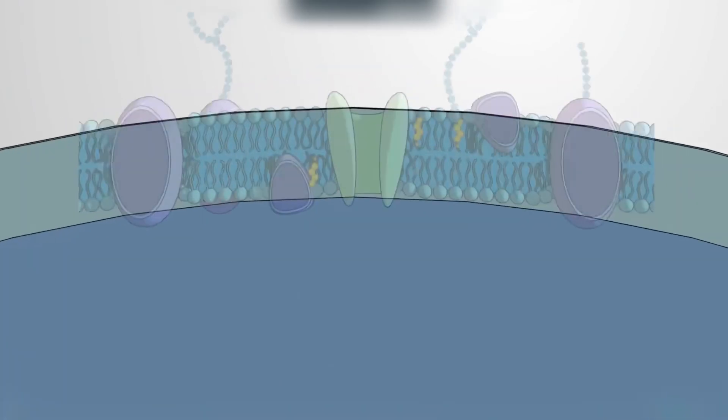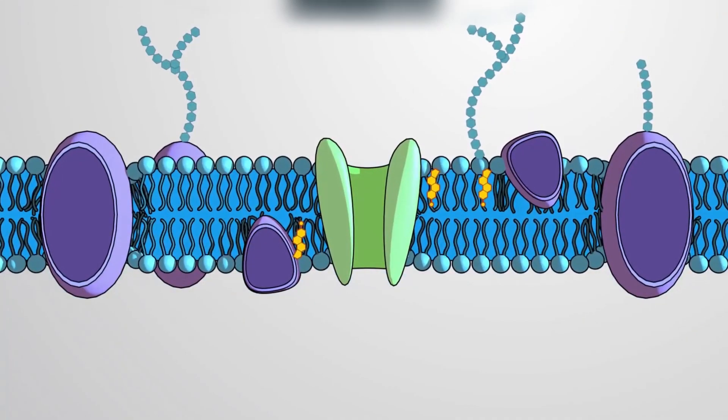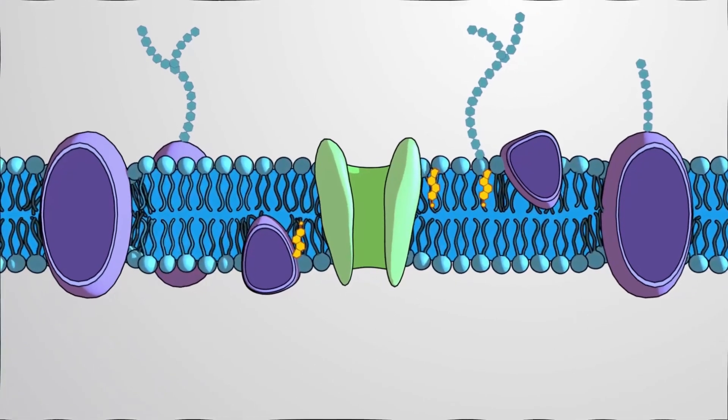The fluid mosaic model depicts the structure of the plasma membrane as a variety of components, which include phospholipids, proteins, and carbohydrates. These integral molecules are separate, yet loosely bound, defining the cell's border and providing fluidity for optimal function.